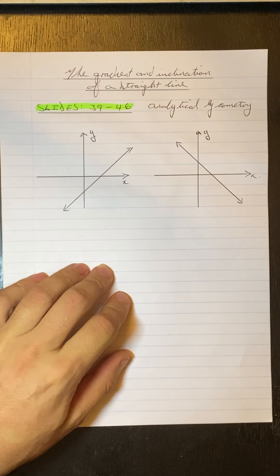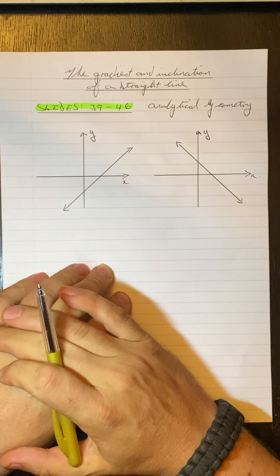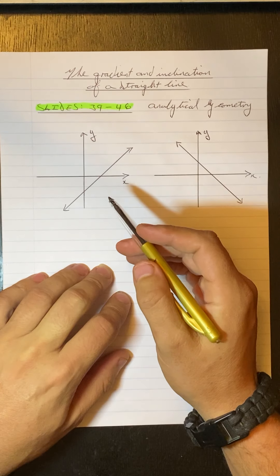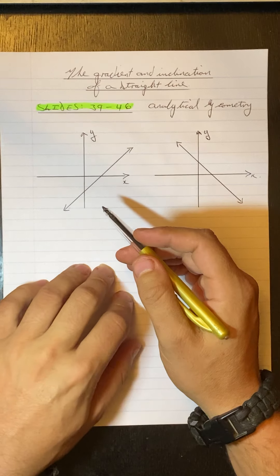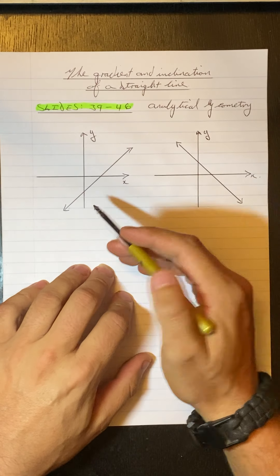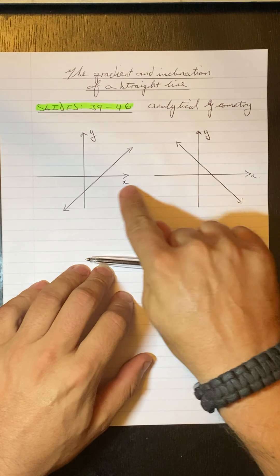Now, before we go into any of the problems on that, let me rather discuss what is an angle of inclination. An angle of inclination is the angle that the straight line makes with the x-axis. And we always measure it on the top of the x-axis, never at the bottom.